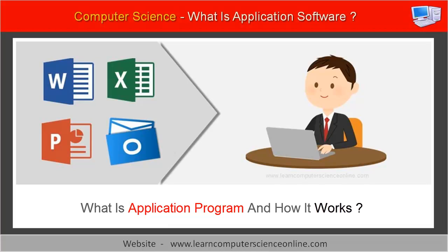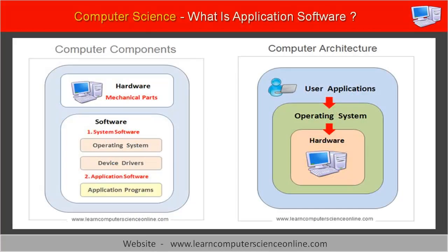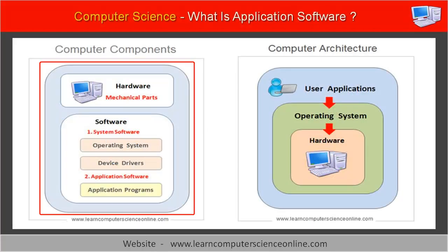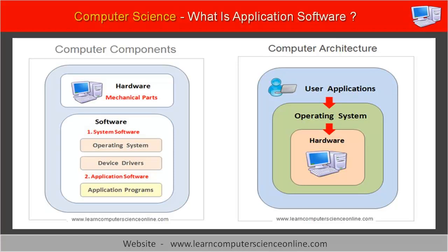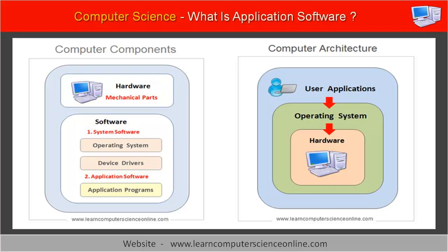Let us now understand in detail what is an application program and how it works. Each computer system broadly consists of two types of components: the first type are called the hardware components, and the second type are called the software components.